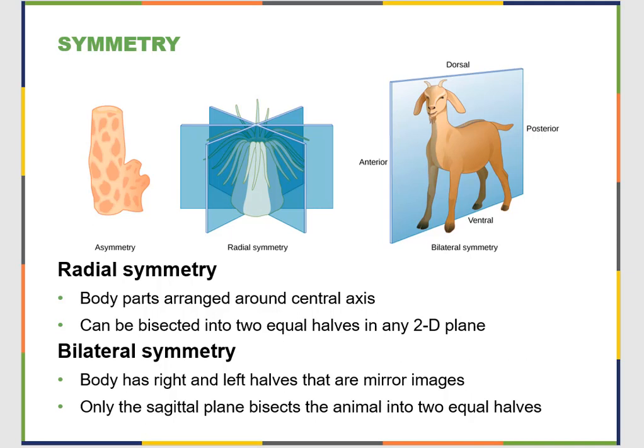You can bisect or cut in half a radial animal, and as long as you're cutting down the middle, it doesn't matter where you cut — you get two equal halves all around. This body plan is evolutionarily more simple. If you look at the genes required to make a radial body plan versus a bilateral body plan, radial takes less planning. Bilateral, on the other hand, is when you cut down the sagittal plane — you cut into left and right, and they are mirror images.